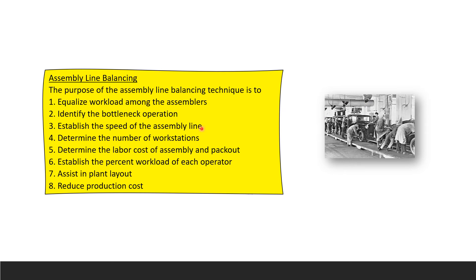Assembly line balancing: from one to eight, we're going to equalize workload among the assemblers, establish the speed, determine the number of workstations, determine the labor cost and pack out, establish the percent workload of each operator, assist the plant layout. The layout's gotta be always updating every month, and reduce the production cost.